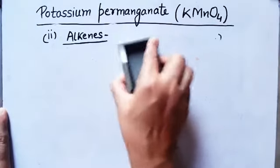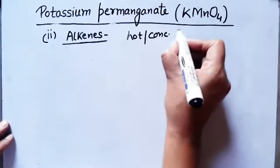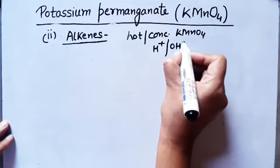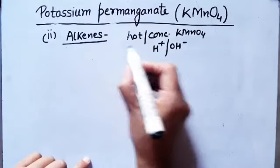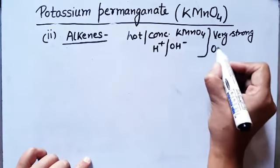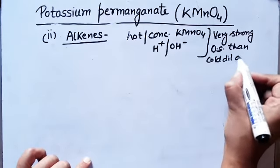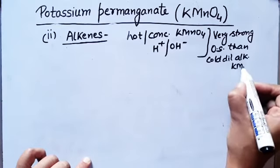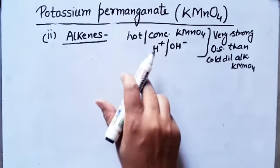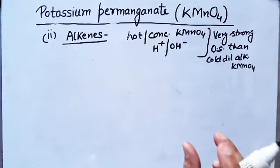Next is the reaction of alkenes with hot concentrated KMnO₄. Hot concentrated KMnO₄ can be used in both acidic and alkaline medium. Hot concentrated KMnO₄ is a much stronger oxidizing agent than cold dilute alkaline KMnO₄. Hot concentrated KMnO₄ is a very, very strong oxidizing agent.